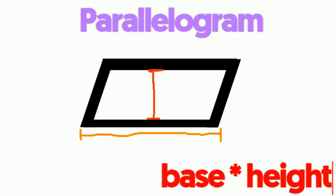Base times height. Let's say that the base of this parallelogram is 6 units, and the height is 4 units.